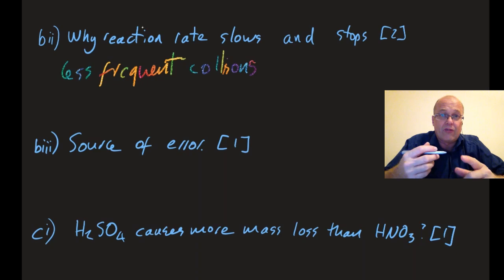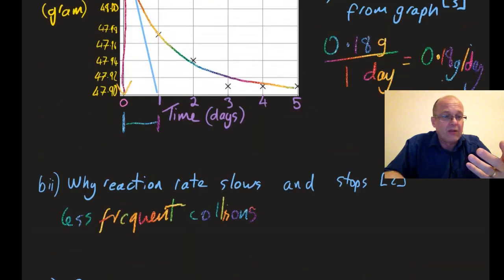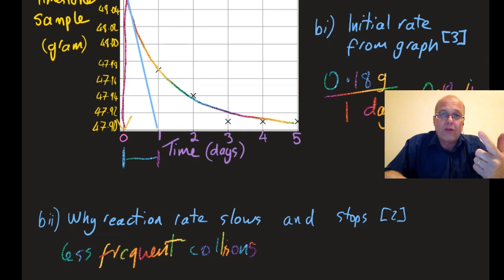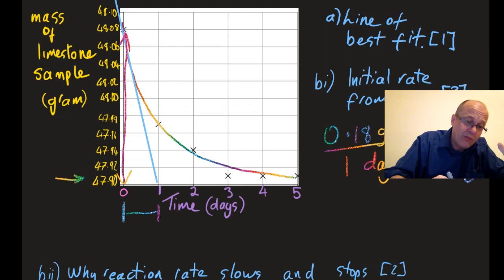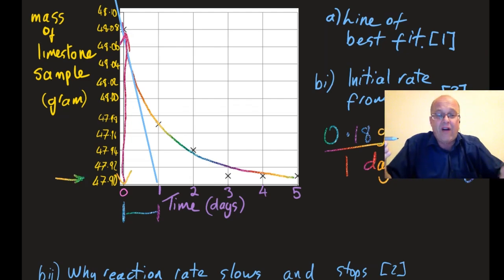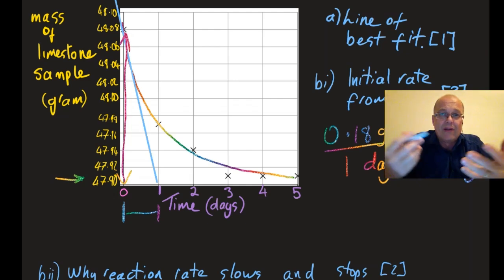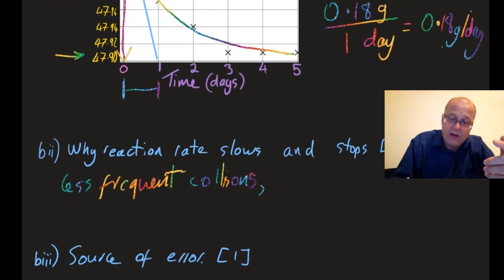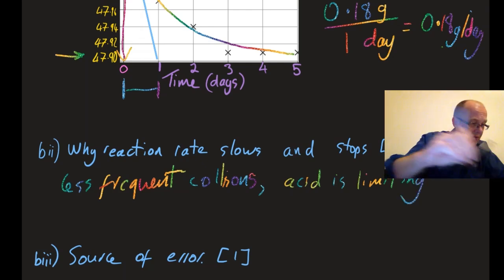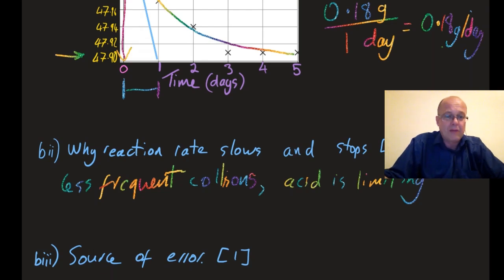Why does the reaction stop? It stops because you've run out of a reactant. They need you to identify which one, the limiting reagent. Is it the chalk or the acid? Since the reaction's pretty much stopped and you've still got about 47.95 grams of limestone, that must be the excess, so the acid must be the limiting one. The acid's run out, or the acid is limiting. That's your second point. How many people got that? 50%.